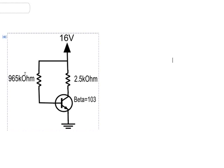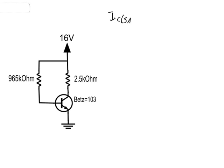Let's go to our circuit. The first thing we'll do is figure out the load line by finding the two extremes. If this circuit were pushed into saturation, the collector saturation current IC_sat would be 16 volts over 2500 ohms, which gives us 6.4 milliamps. That's when there's no voltage between the collector and the emitter.